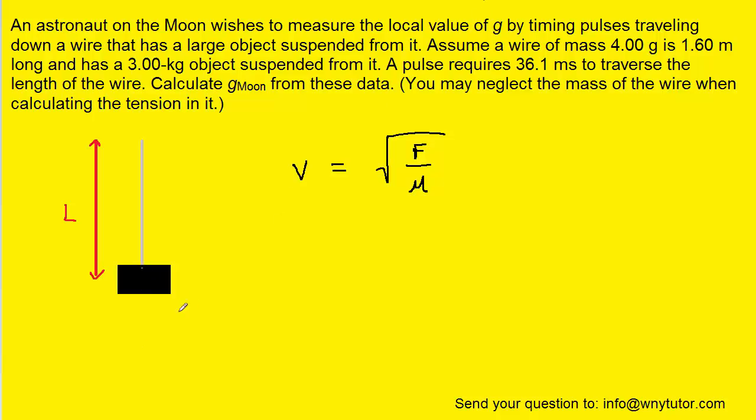In fact, it might be worth noting right off the bat here that the tension in the string is going to be equal to the gravitational force of this block as it's pulling down on the string. And so we can actually substitute in for the force of tension the expression mg. And then the term μ in the denominator is equal to the mass of the wire divided by its length, so we can actually substitute that in as well.